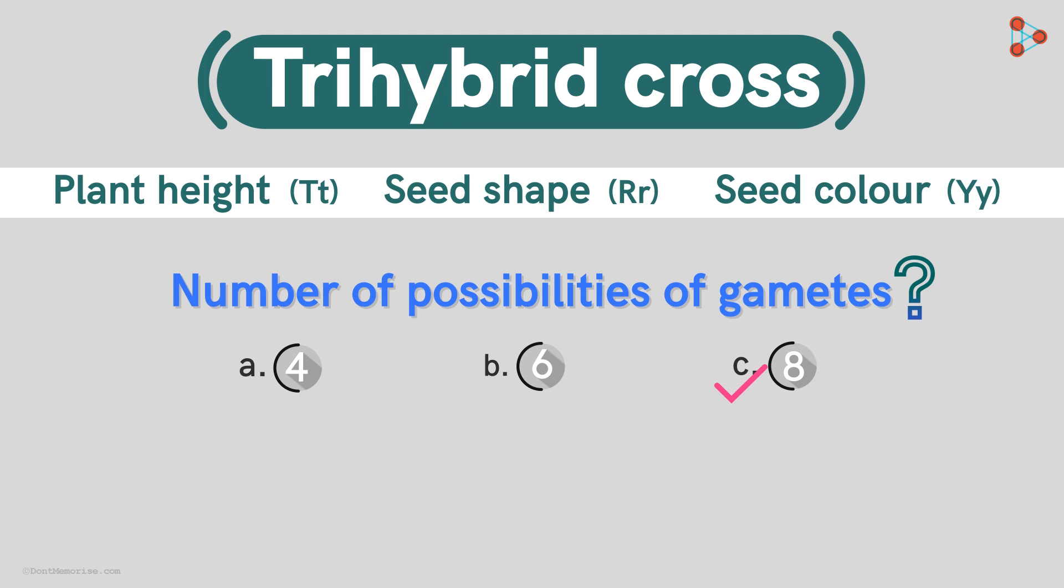The simple trick is by using the formula 2 raised to n! Here n is the number of characters considered at a time! Now since this is a trihybrid cross, the formula will be 2 to the power 3 which gives us 8! So there are 8 possible combinations of gametes that are obtained!